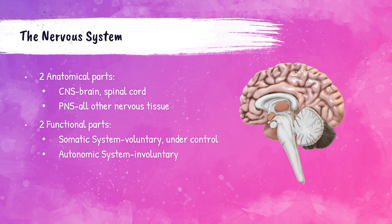The nervous system has two structural parts: the central nervous system, which includes the brain and the spinal cord, and the peripheral nervous system, which contains all the other nervous system tissue. Within those two structural parts, there are two functional parts: the somatic system and the autonomic system. The somatic system is comprised of nerves that link the brain and spinal cord to voluntary muscles, so it's considered under conscious control. The autonomic system is not under conscious control — the actions are involuntary.